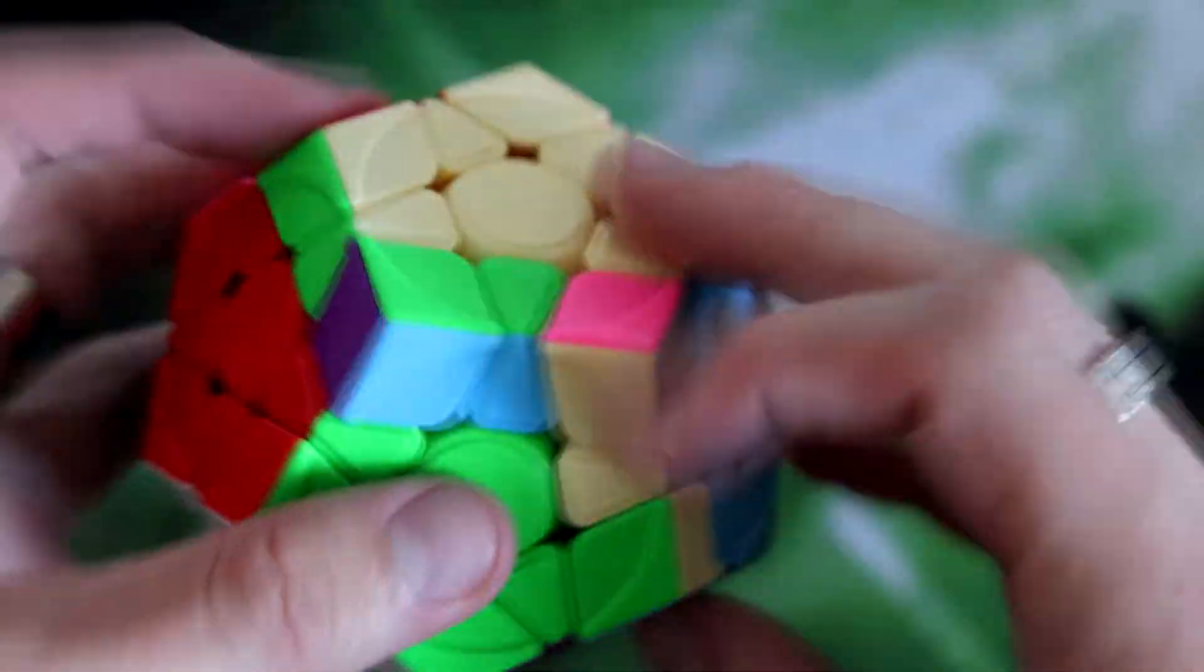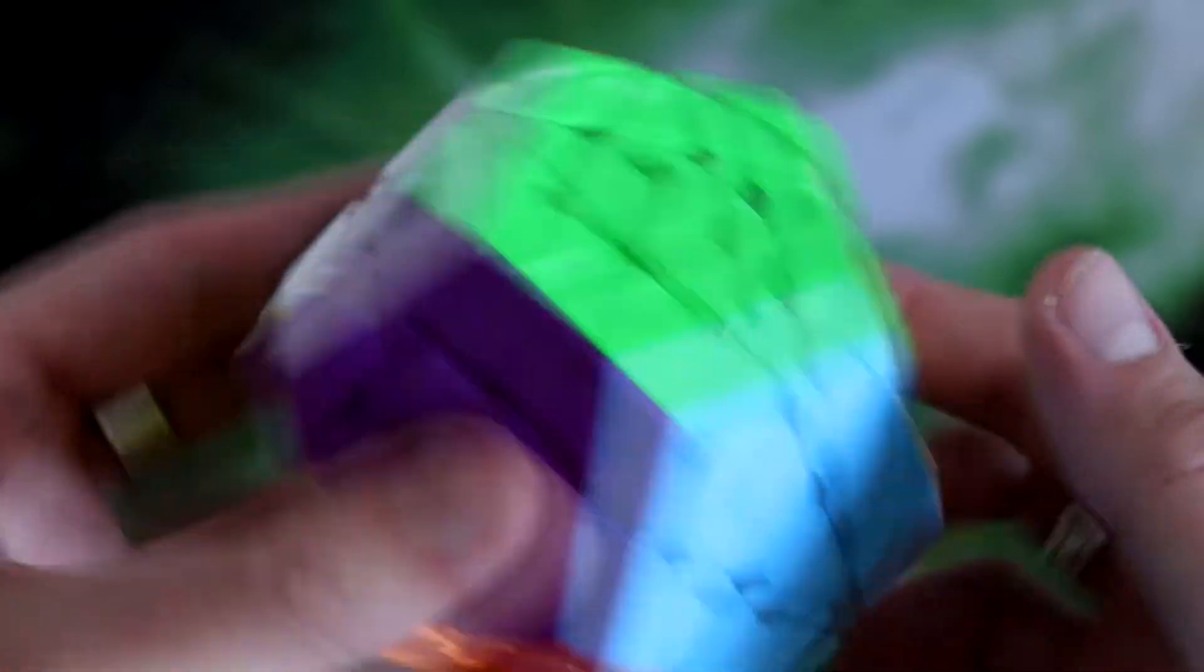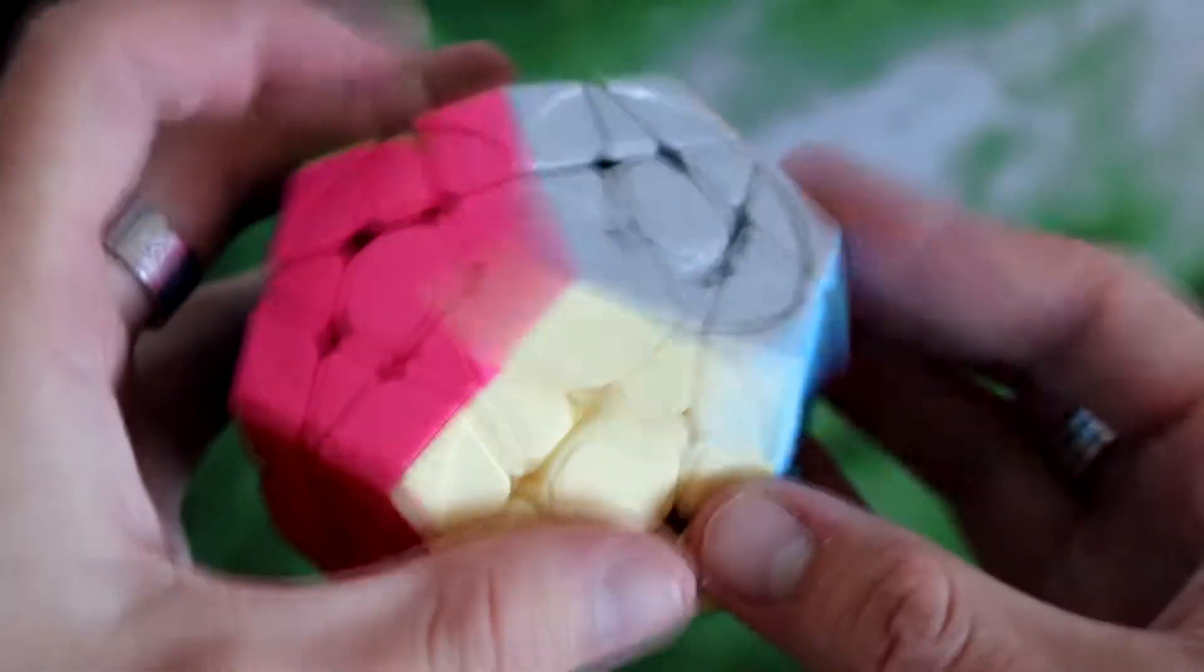So if you're looking for a budget Megaminx, I would say this might be the one. It's 12 euros, 12 dollars, depending on where you get it. I bought this at Cube Diction, very nice cube store here in the Netherlands.